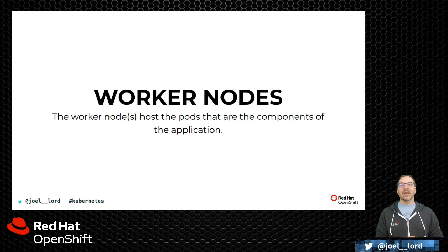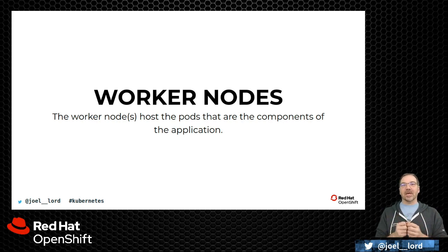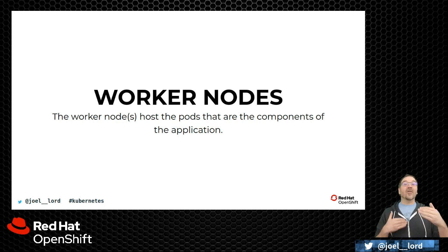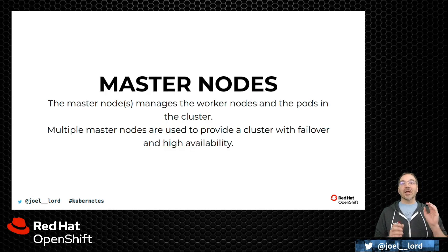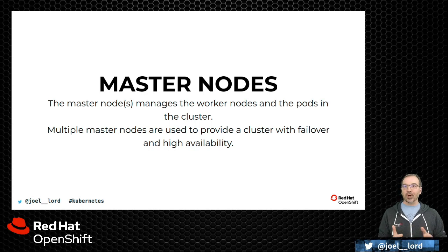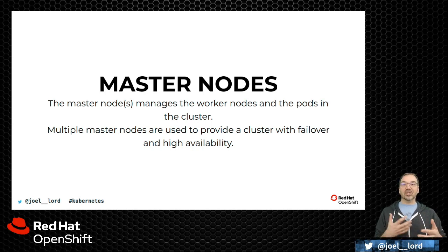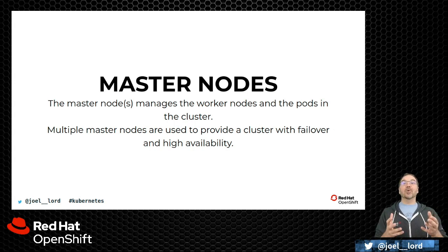The first type of node is the worker node, where our containers will be hosted. I'll be using Minikube — a small, lightweight Kubernetes distribution you can run on your laptop — which will run a single worker node. Normally you could have multiple nodes and your cluster will distribute the different containers across those nodes. You also need a master node, or multiple master nodes. The master nodes are in charge of dispatching and placing the containers on the various worker nodes in a logical and efficient manner. Multiple master nodes ensure you always have a backup if one fails.